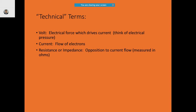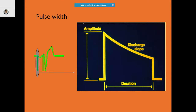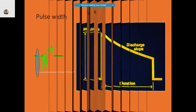Pulse width is the length of time in milliseconds that the output pulse is delivered. In this figure you can clearly see the amplitude and the duration, which defines the pulse width. Ohm's law: V = IR, where V is the voltage, I is the current in milliamps, and R is the resistance. If resistance is more, the current that flows is less — an inverse relationship.